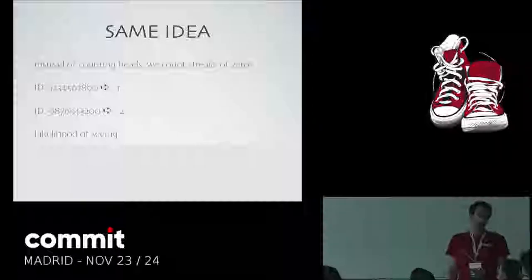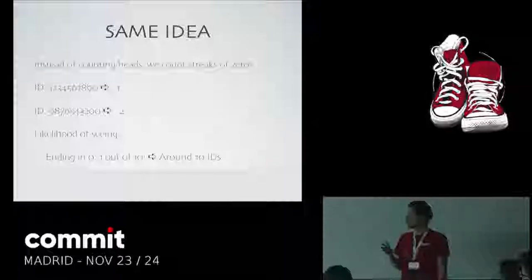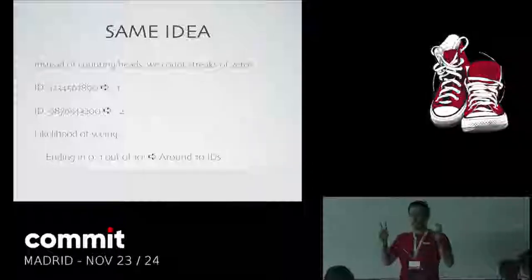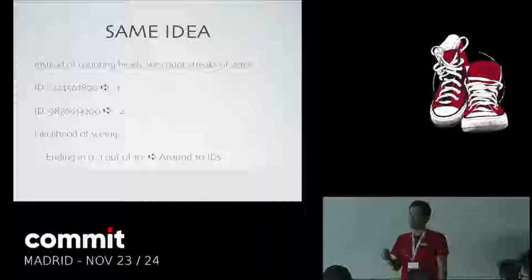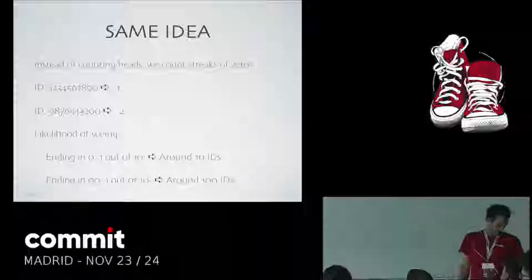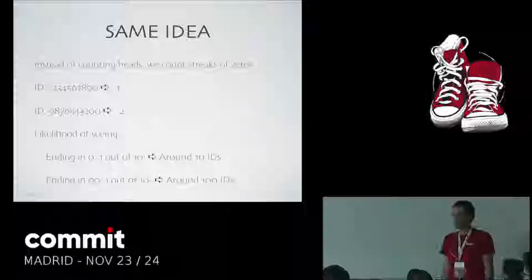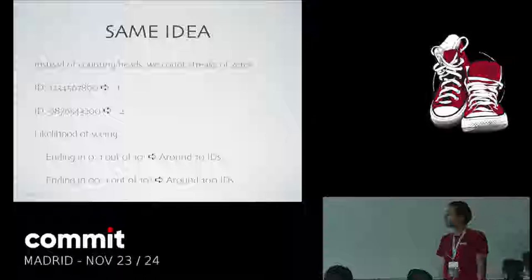And in the second case with two zeros, the chances are ten to the power of two — so if we see an ID with two zeros, it means we've probably seen around 100 IDs. This is the core concept the whole algorithm is built on. Instead of keeping IDs in memory, we are just going to count the chances of seeing these IDs.